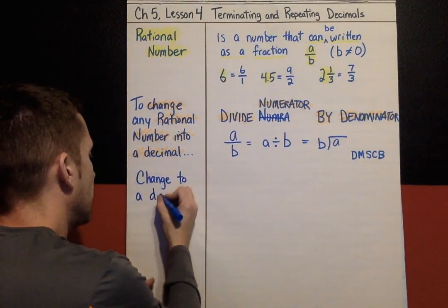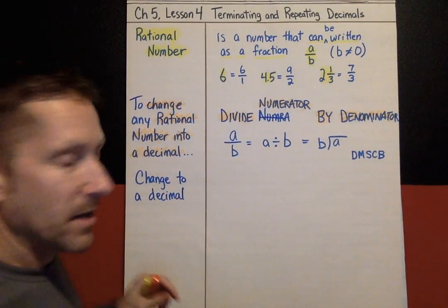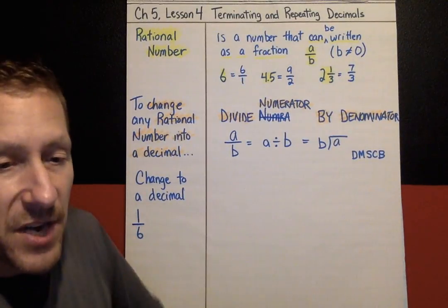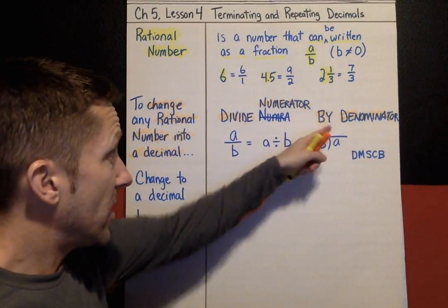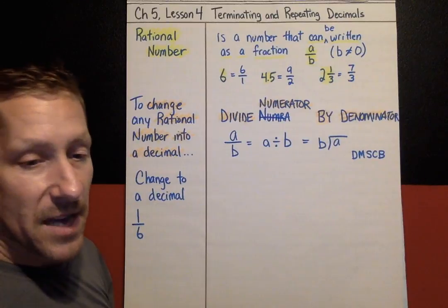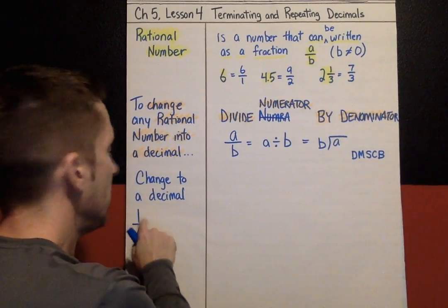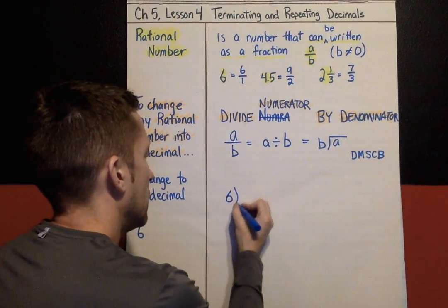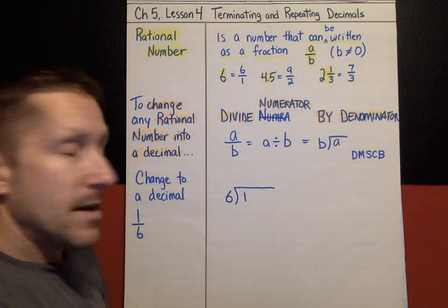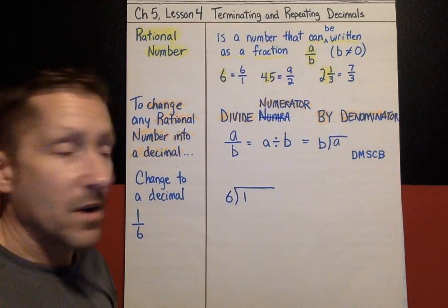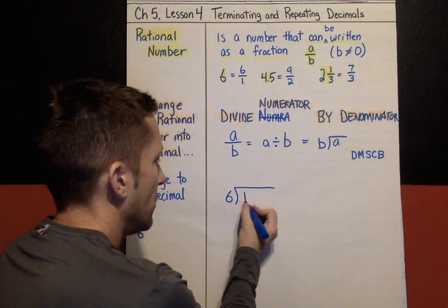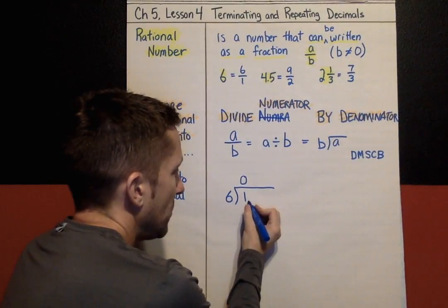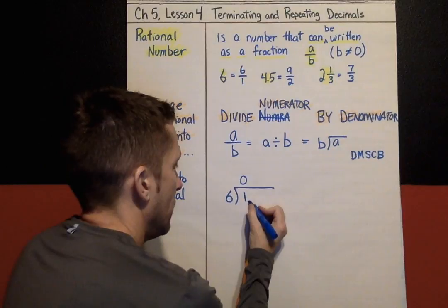Let's change the following to a decimal: one-sixth. To change that to a decimal, we divide numerator by denominator using long division steps. One divided by six means the one goes on the inside. How many times does six go into one? Zero times — it doesn't go in at all. In order to continue, I need to add a decimal point, which goes straight up in my answer. Now I can add zeros and keep dividing.